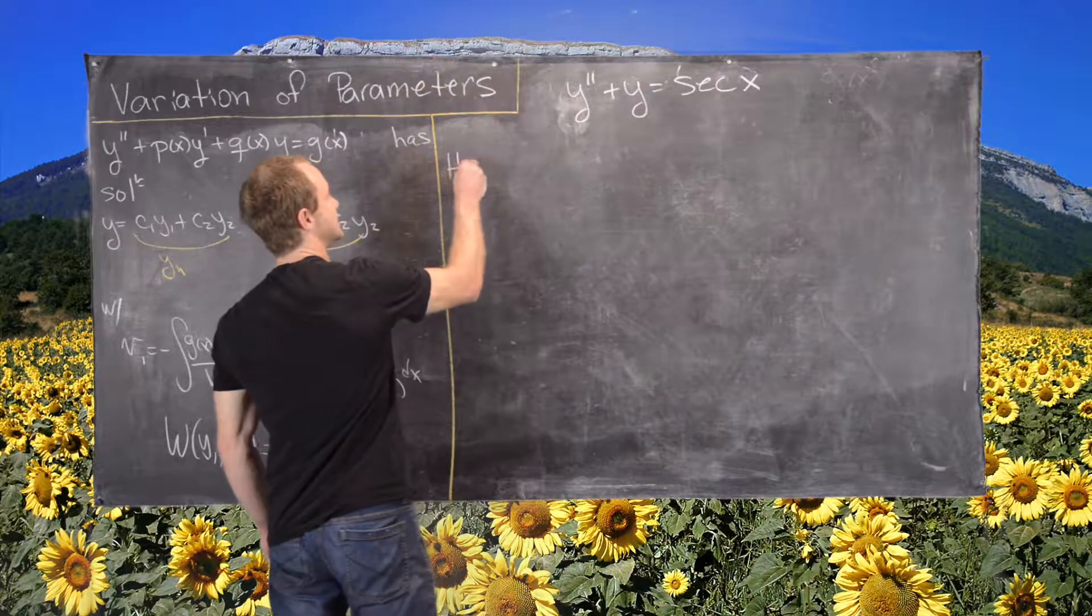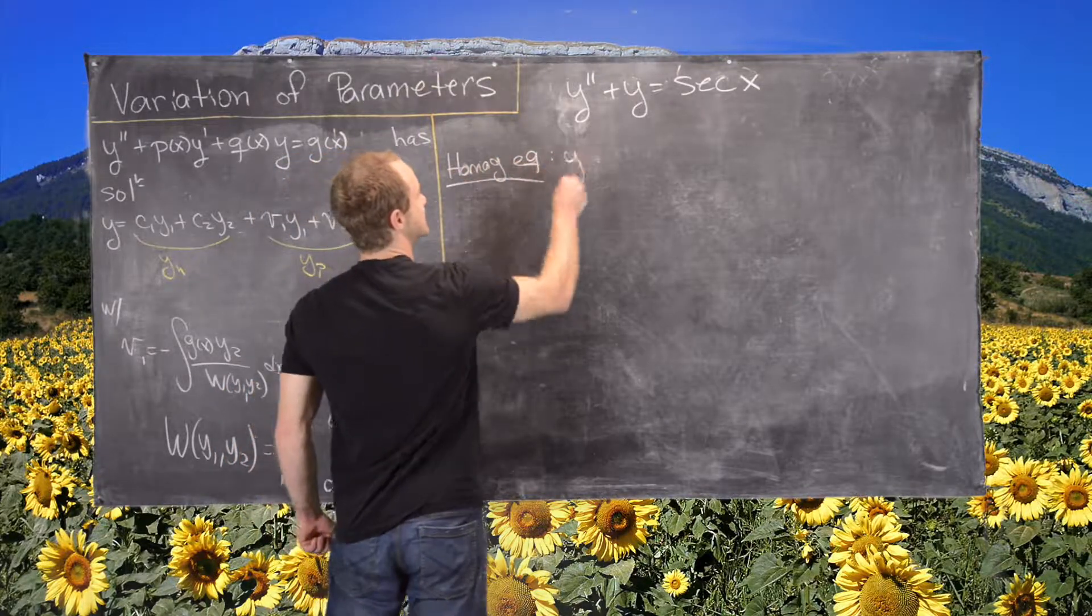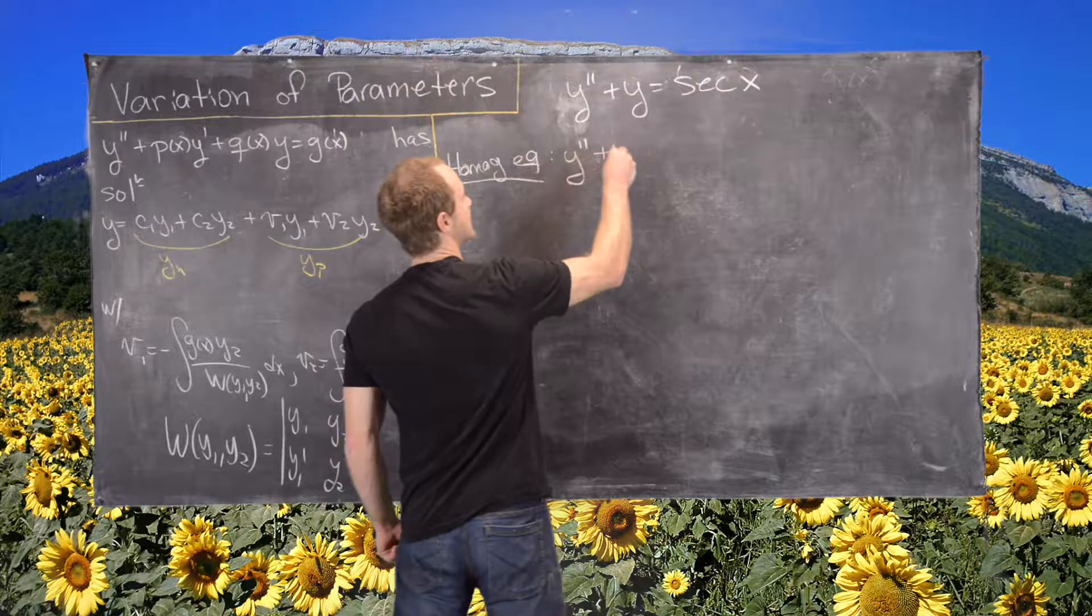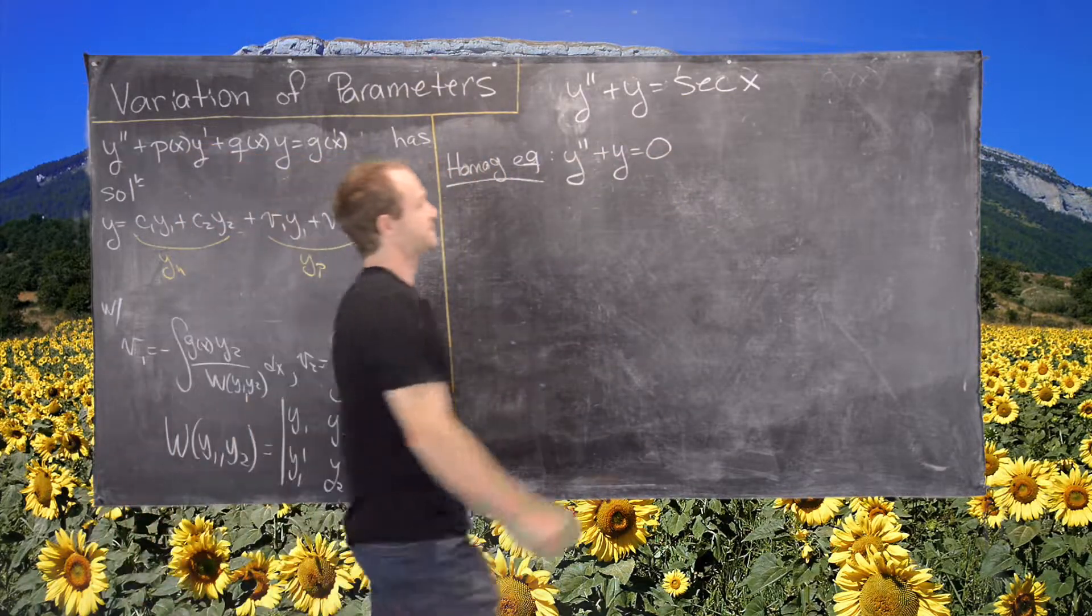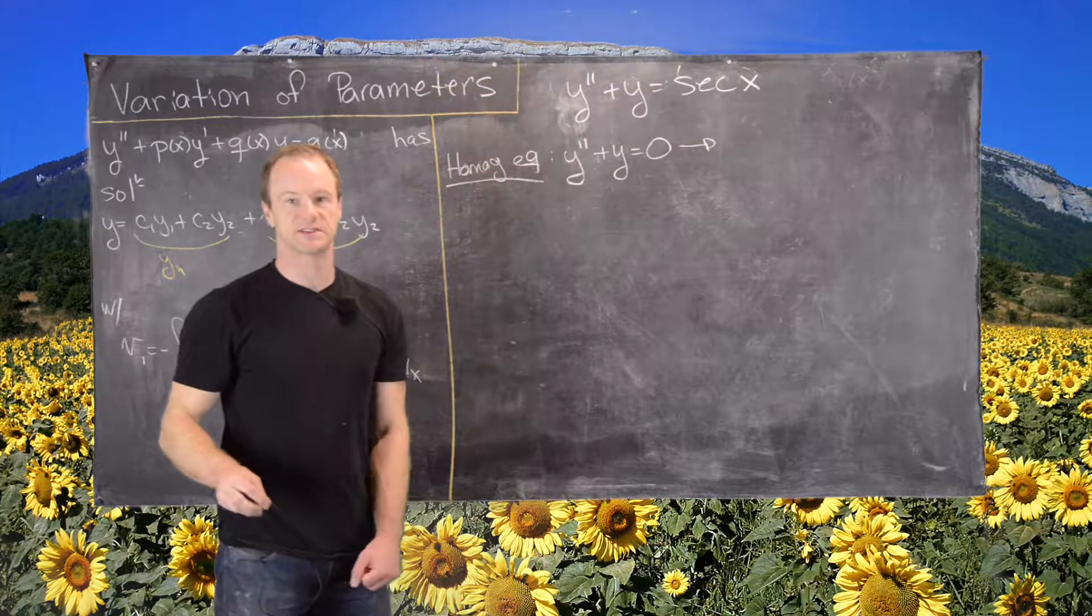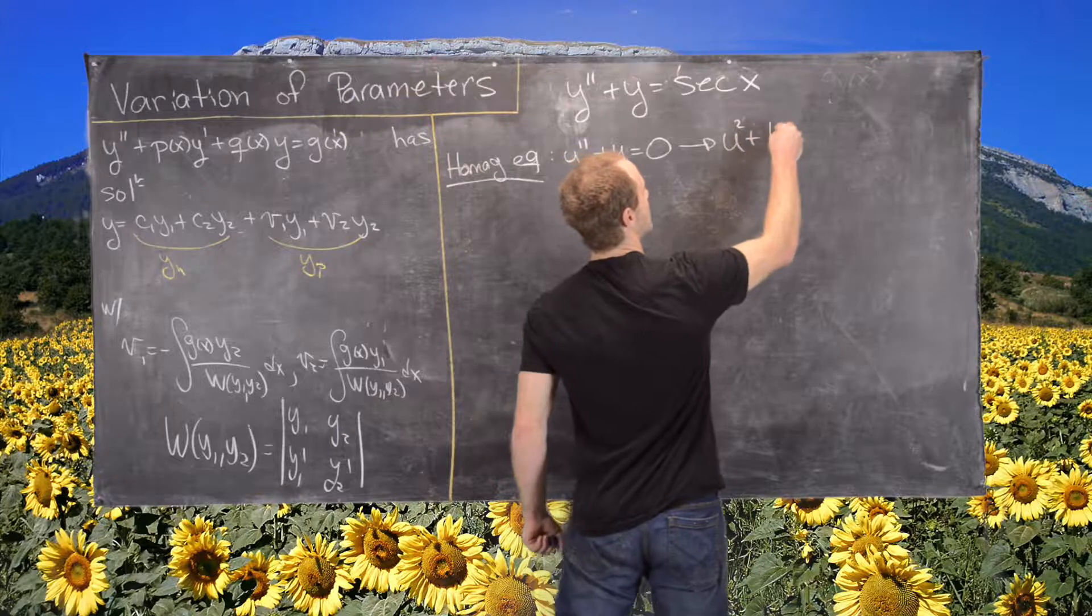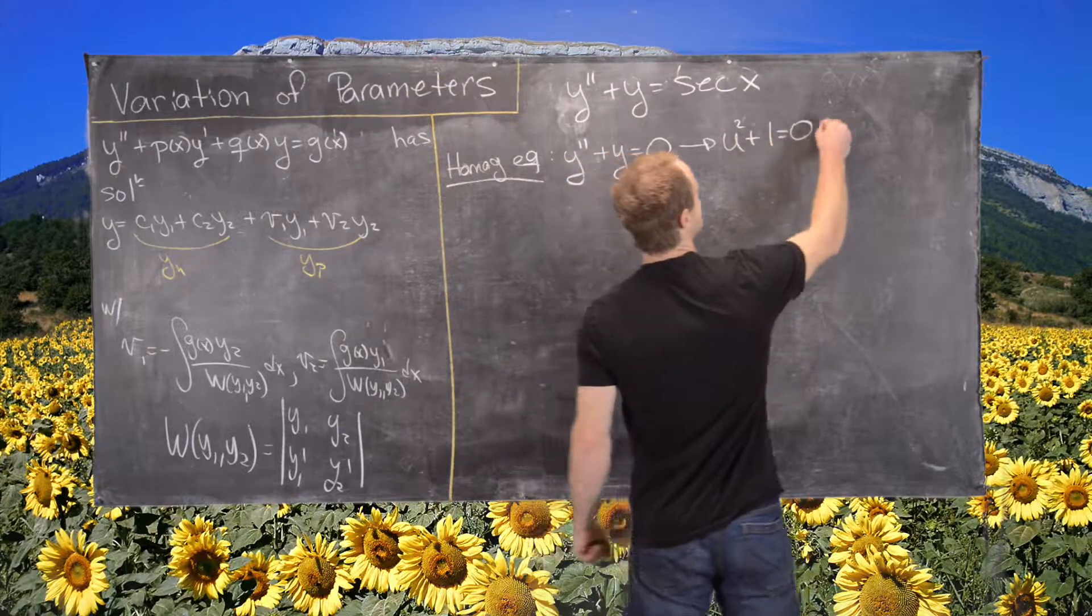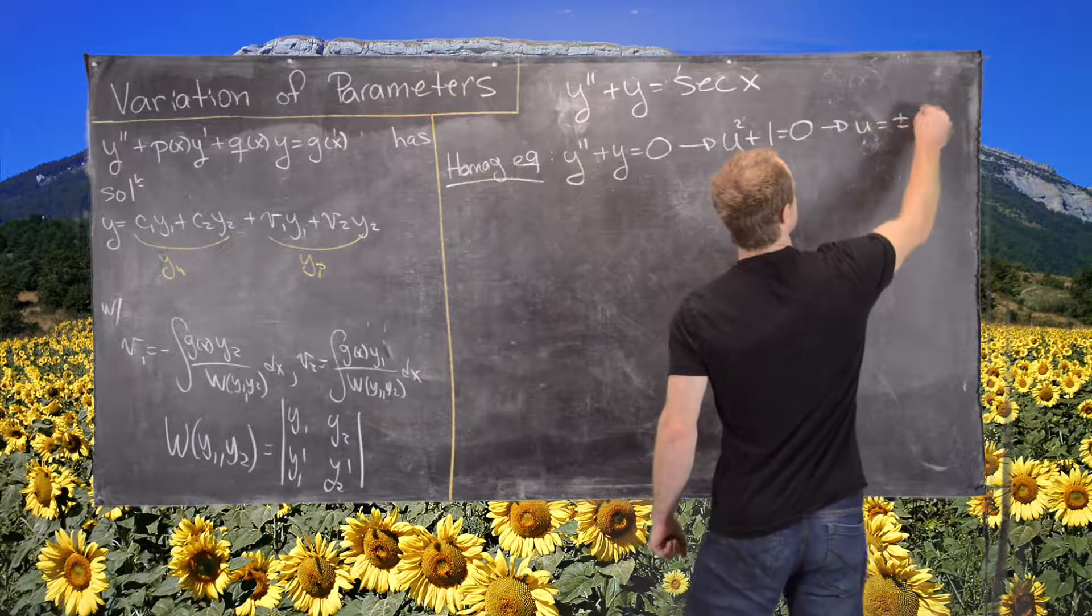So let's look at the homogeneous equation. So that would be y double prime plus y equals 0. This one's fairly simple. We can look at its characteristic polynomial. So u squared plus 1 equals 0. And so that has roots u equals plus minus i.